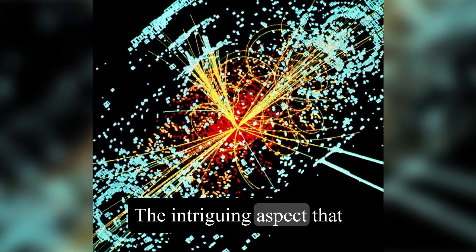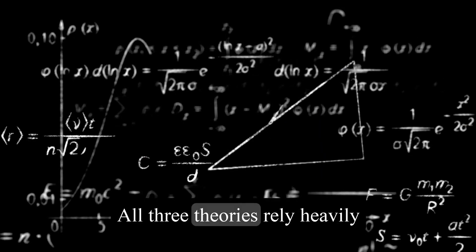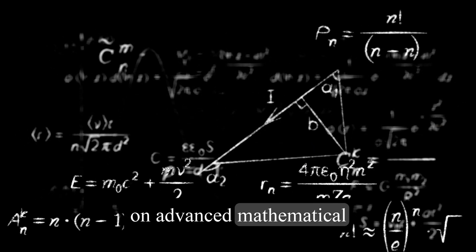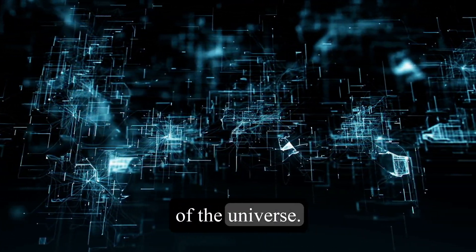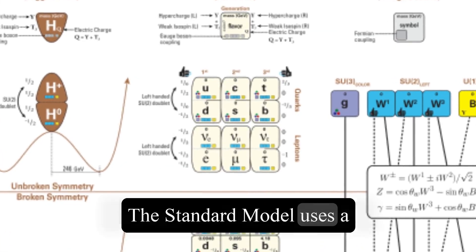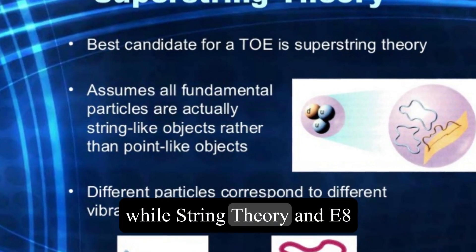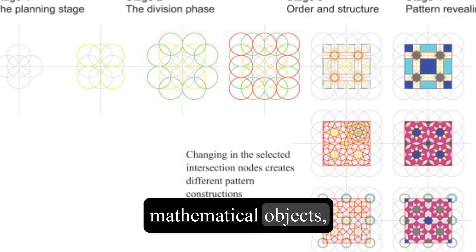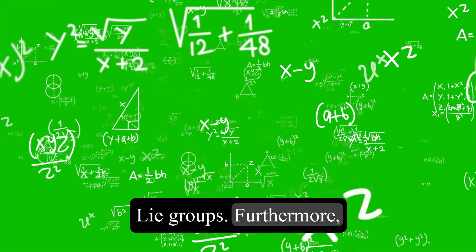The intriguing aspect that connects these theories lies in the mathematics they employ. All three theories rely heavily on advanced mathematical structures to describe the fundamental building blocks of the universe. The standard model uses a mathematical framework known as quantum field theory, while string theory and E-8 theory employ more complex mathematical objects, such as advanced geometry and Lie groups.